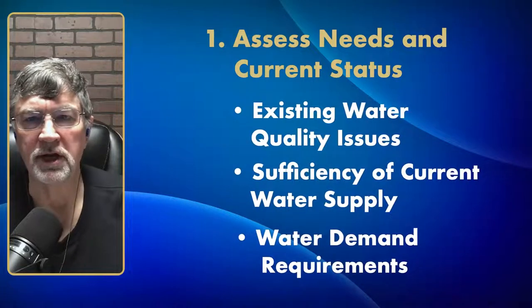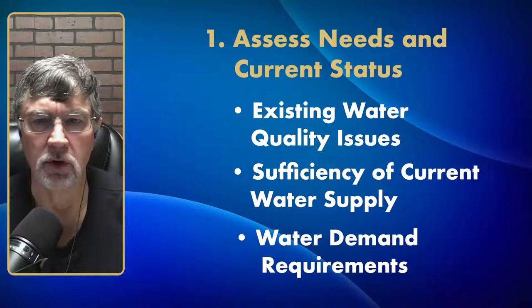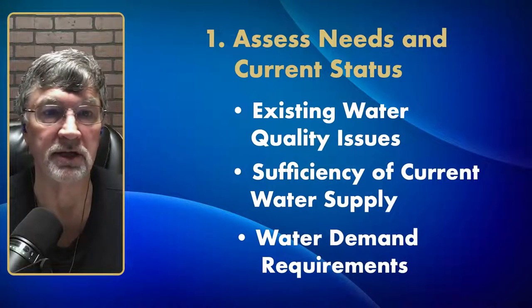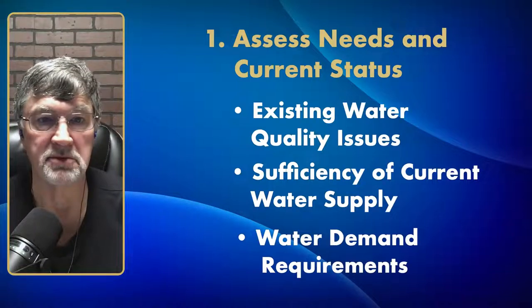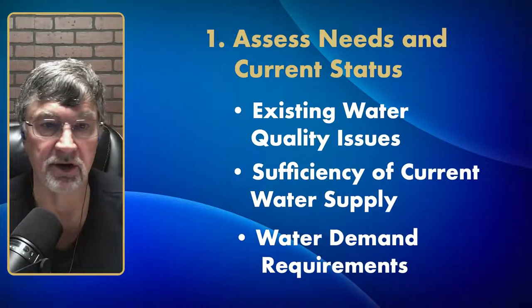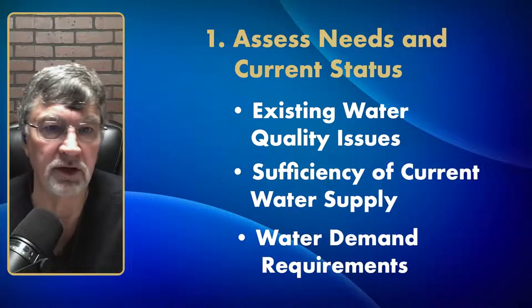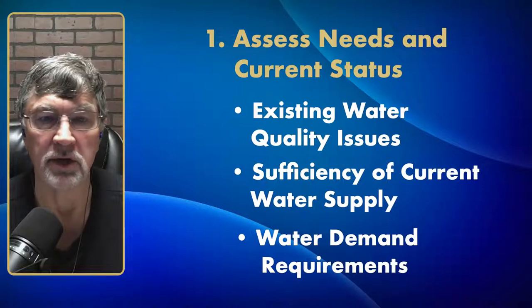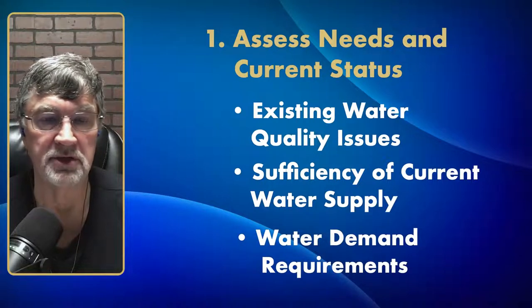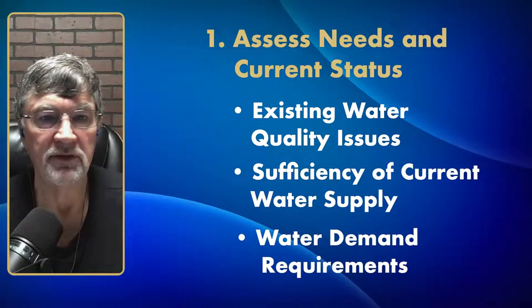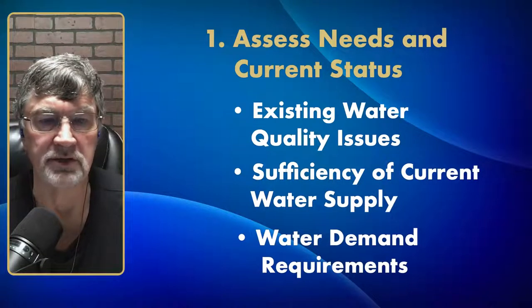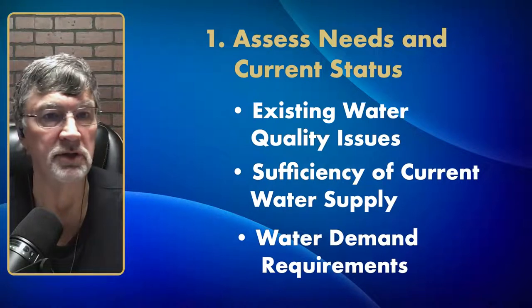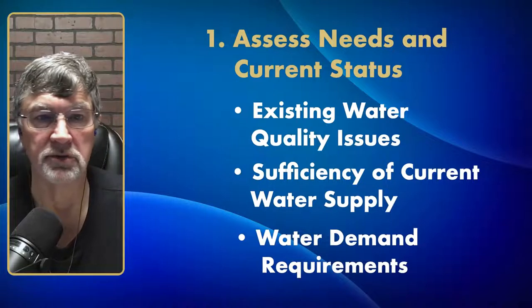We need to assess our needs and current status. What kind of existing water quality issues do we have? Some areas may have arsenic, and we need to look at what water quality issues exist in the area. If you have things like arsenic, radionuclides, or fluoride showing up in wells in the area, you can do that assessment right in the test boring during your zone testing and modify the well design to take those things into account right up front — maybe reducing or eliminating the need for treatment.